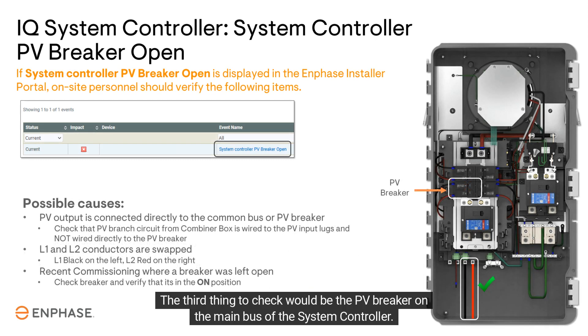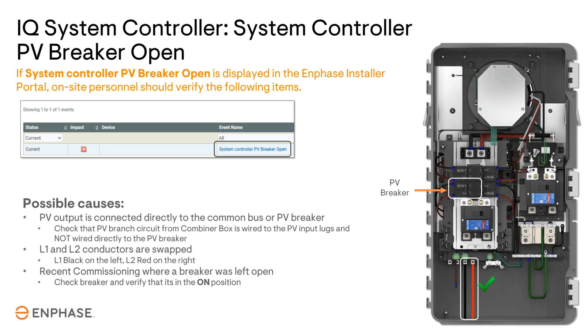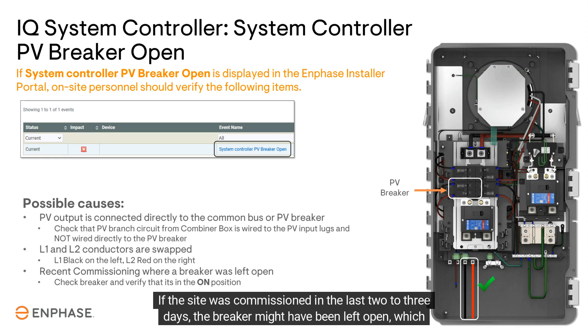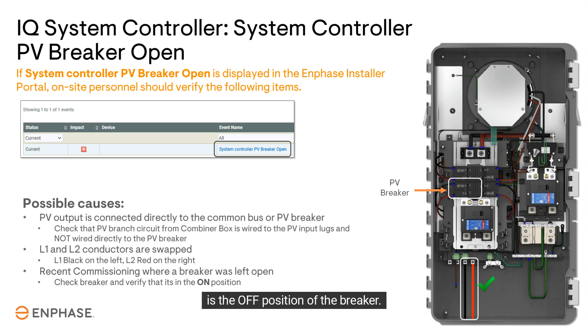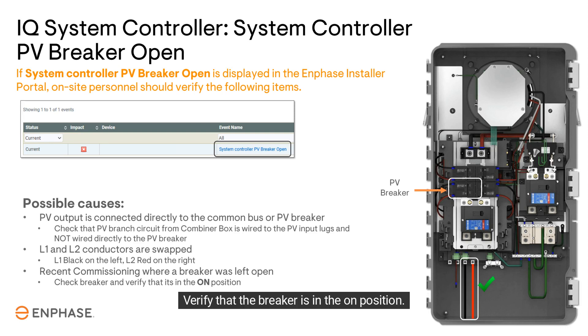The third thing to check would be the PV breaker on the main bus of the system controller. If the site was commissioned in the last two to three days, the breaker might have been left open, which is the off position of the breaker. Verify that the breaker is in the on position.